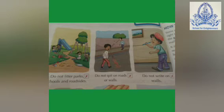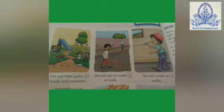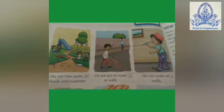Keeping our surrounding clean — what should we do and what should we not do? We should not litter parks, schools and roads. हमें parks में कचरा नहीं फैलाना चाहिए। Do not spit on the roads or walls, and don't write on the walls. हमें दीवारों पे लिखना नहीं चाहिए।